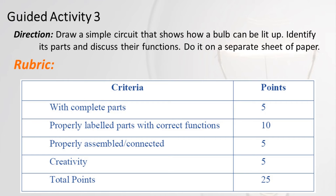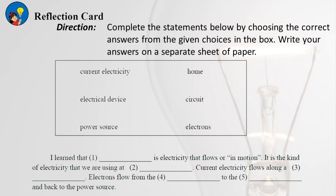Guided Activity 3 — Direction: Draw a simple circuit that shows how a bulb can be lit up. Identify its parts and discuss their functions. Do it on a separate sheet of paper. Rubric: complete parts — 5 points; properly labeled parts with correct functions — 10 points; properly assembled/connected — 5 points; creativity — 5 points. Total: 25 points.